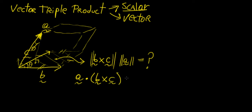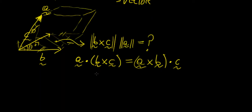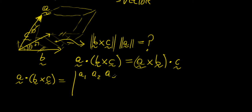One really nice property is that you can grab any two of the vectors, take their cross product, and then dot with the other one and still get the same answer — a really interesting cyclic property. Another neat property is that you can calculate the triple scalar product as a 3×3 determinant, where the first row is all elements of a, then b1, b2, b3, then c1, c2, c3.